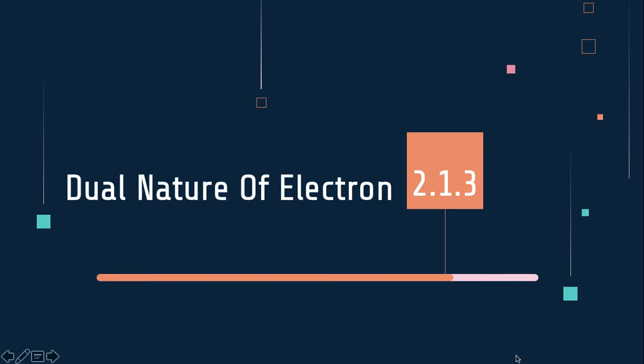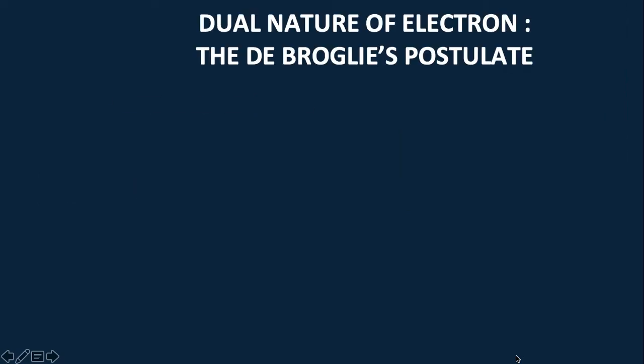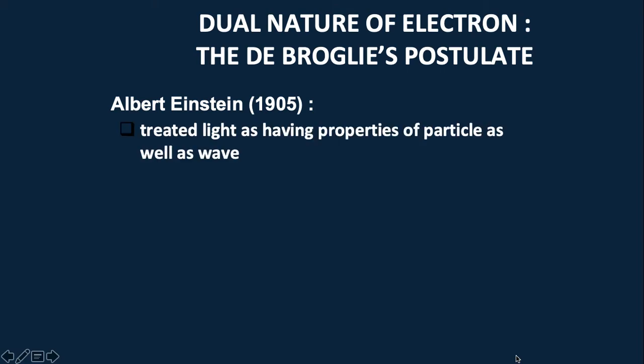Dual Nature of Electron: The de Broglie's Postulate. Albert Einstein states that treated light as having properties of particle and wave, so it means that light have both properties, the particle properties and wave properties.